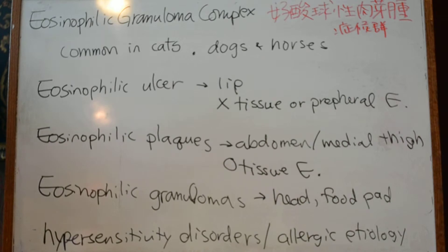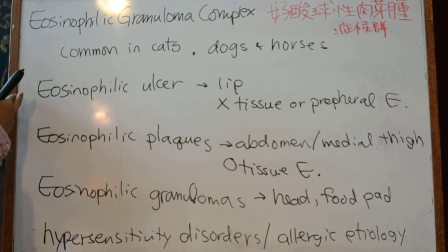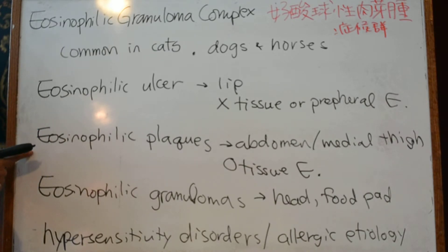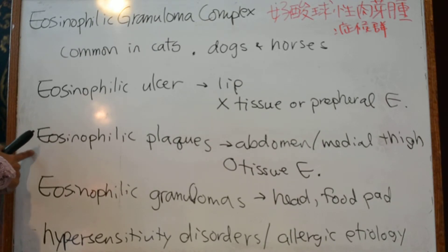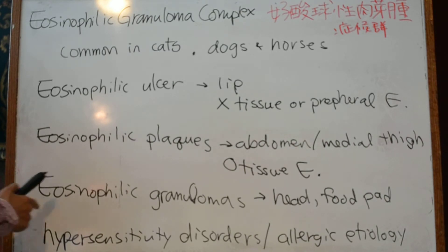抗酸急性肉芽腫症候群は猫でよく見られますが、犬と馬でも見られることがあります。抗酸急性潰瘍は唇の上にできやすく、血液及び組織の好酸球増加症は見られないことが多いです。抗酸急性プラークは腹部や大腿部内側に見られやすく、組織の好酸球増加症が見られ、血液の好酸球増加症もよく見られます。好酸球性肉芽腫は顔面や肉球にみられ、さまざまなところに線状の病変を作ります。